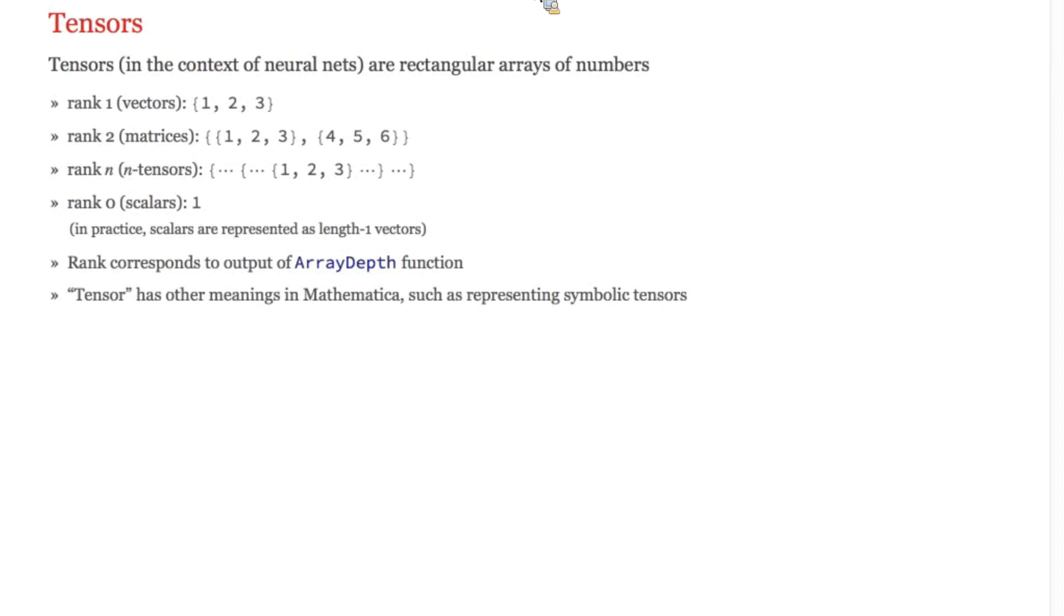Neural networks operate on numeric tensors, which are basically arrays of numbers. Different ranks of tensor are used, depending on the application. So, most common are vectors and matrices, but let's look at some examples.